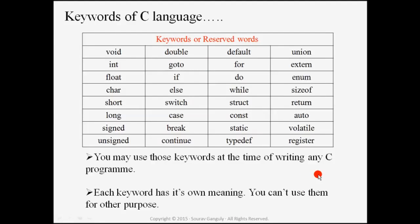Now come to the next point — what are keywords of C language? Sometimes we call these keywords as reserve words. It means that these words have their own specific meaning to the compiler. At the time of writing any program, these words tell the compiler what we want to do. Words like int, float, char, short, and long are all keywords.